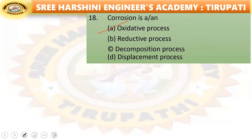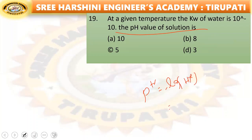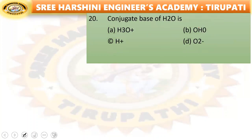Next: at a given temperature, the Kw of water is 10 to the power minus 10. What is the pH value of the solution? We know that pH equals minus log [H+] or minus log [OH-]. Option B is the right answer.